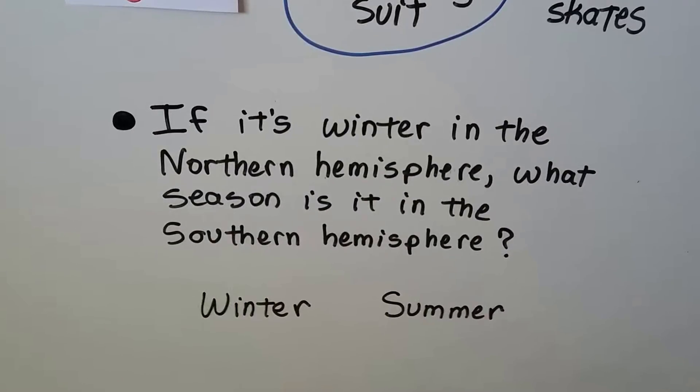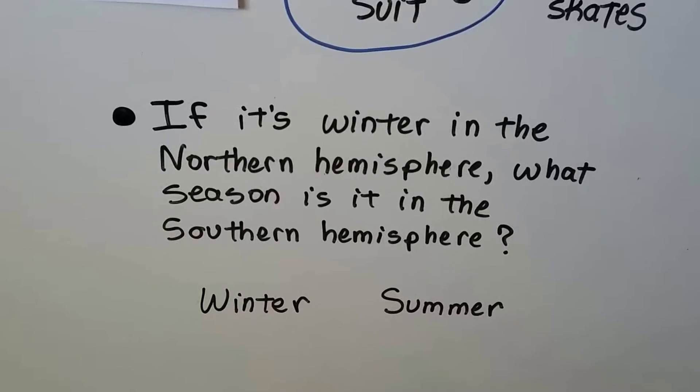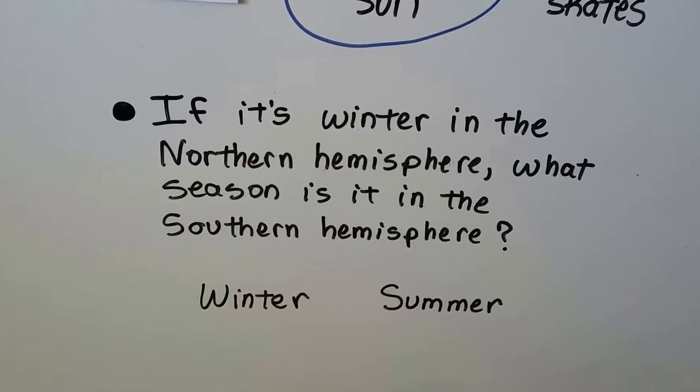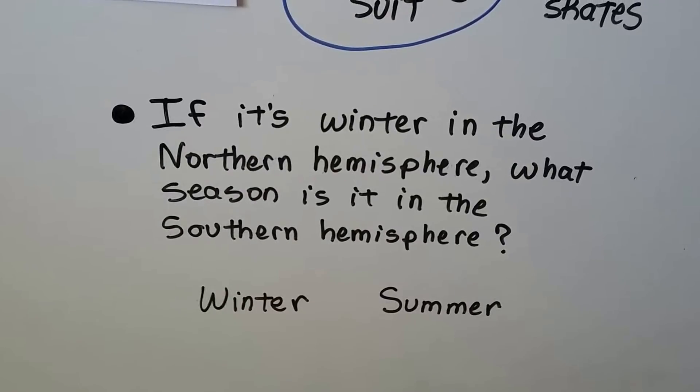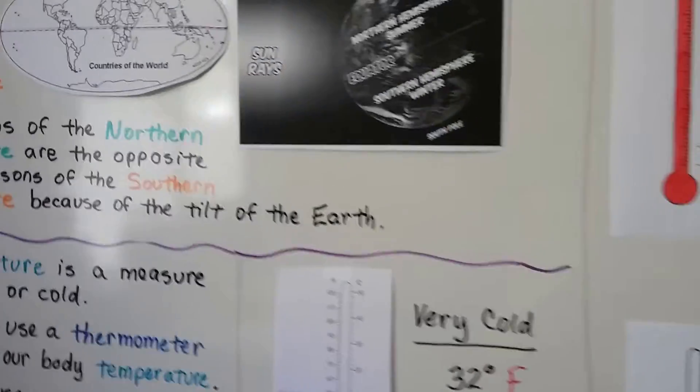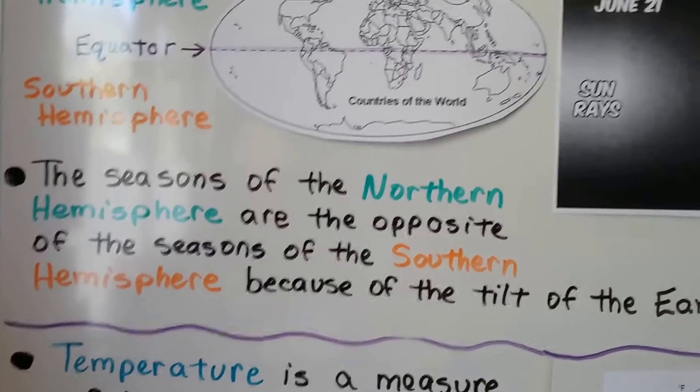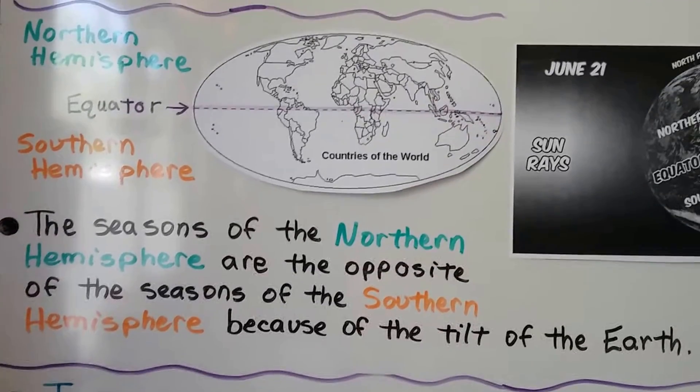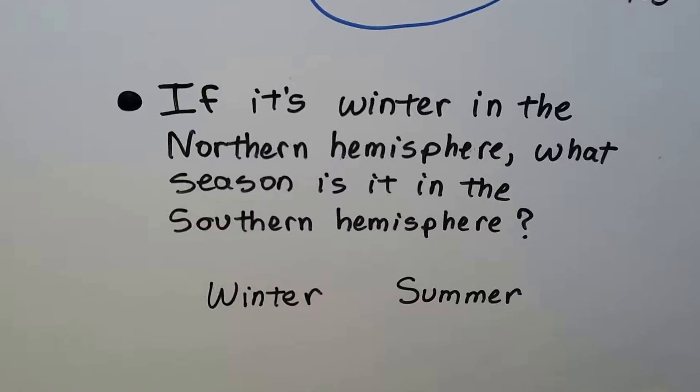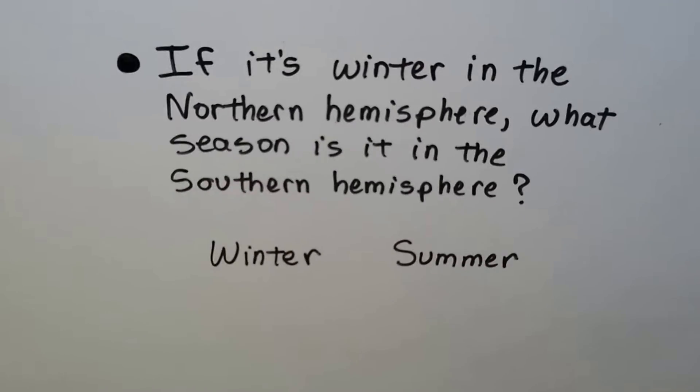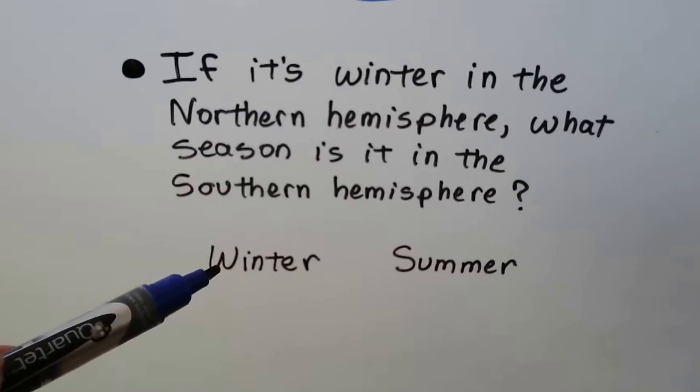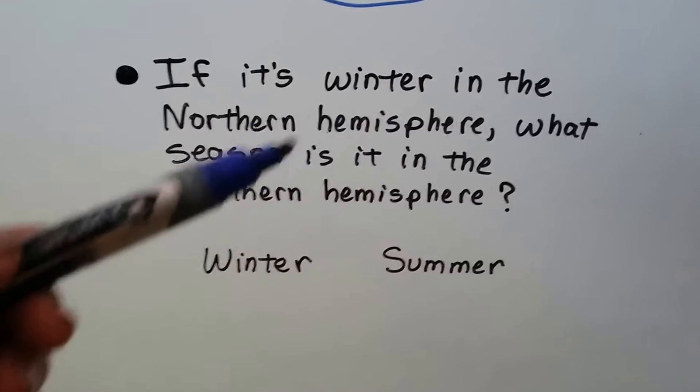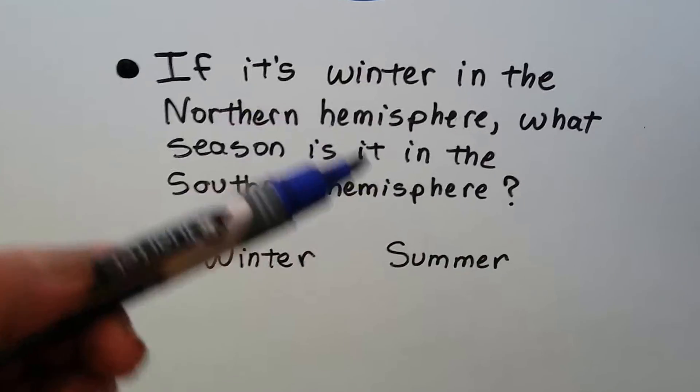If it's winter in the northern hemisphere, what season is it in the southern hemisphere? Is it winter or summer? Now, do you remember what we said in the beginning? We said that the seasons of the northern hemisphere are opposite of the seasons of the southern hemisphere because of the tilt of the earth. So if we look at this question again, if it's winter in the northern hemisphere, what season is it in the southern hemisphere? Well, it wouldn't be the same season, would it?